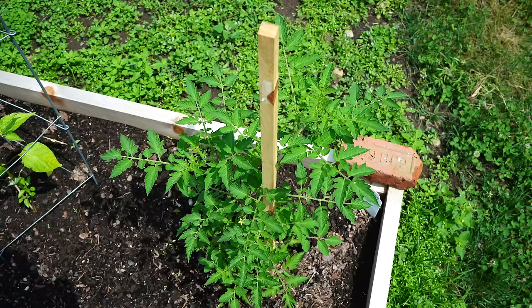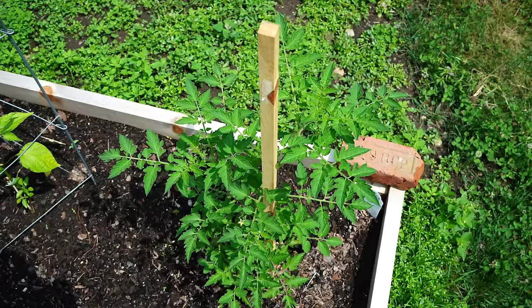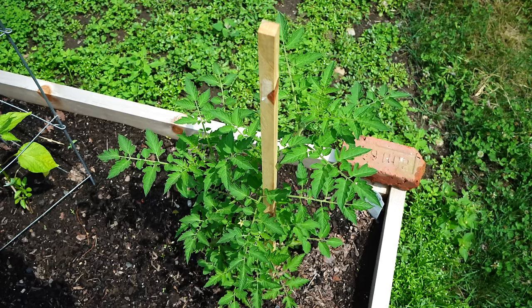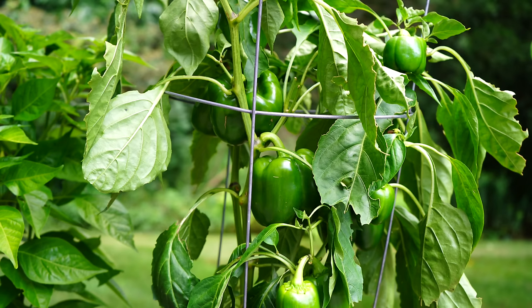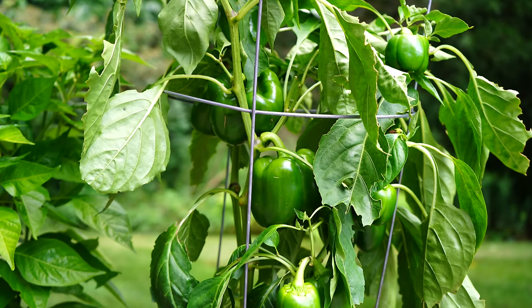Now when it comes to actually providing the support, there are a number of ways to do it, but it can be as simple as a main central stake right alongside the base of the plant. And throughout the season, you can attach your plant to that stake, providing that upright support. Tomato cages, which you can buy at the store, usually aren't very good for growing tomatoes, but they are useful for things like peppers and eggplants. Plants that have a tough time standing upright, but really should be grown vertically.